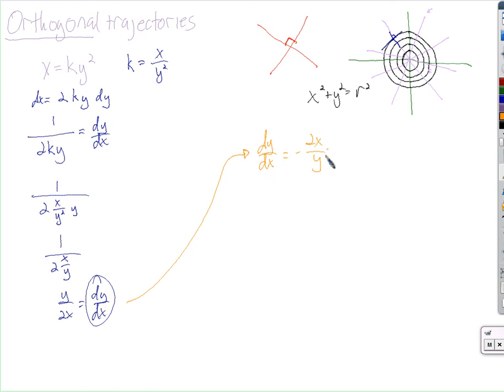So if dy dx equals negative 2x over y, we separate the variables, we solve for y, and we have found the family of curves that has this as its derivative, as its definition of the tangent line, the slope of the tangent line. So we get y dy equals negative 2x dx.